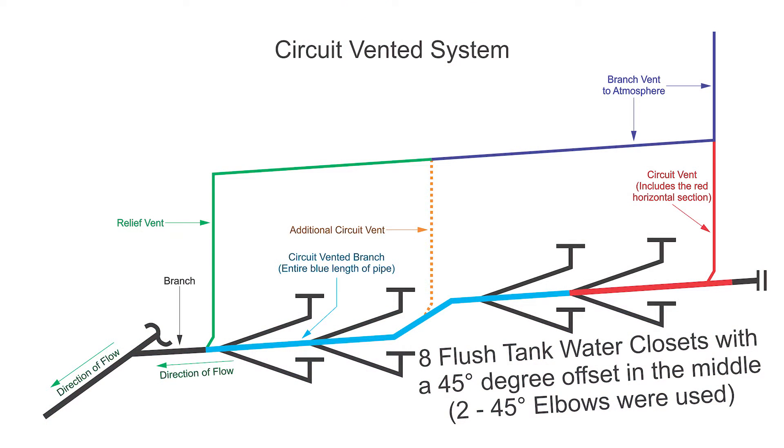So in this diagram we have a typical circuit vented system with eight water closets but we have an offset right in the middle there and it's using two 45 degree elbows, so we've exceeded the 45 degree limit therefore we need to put in an additional circuit vent just like that.